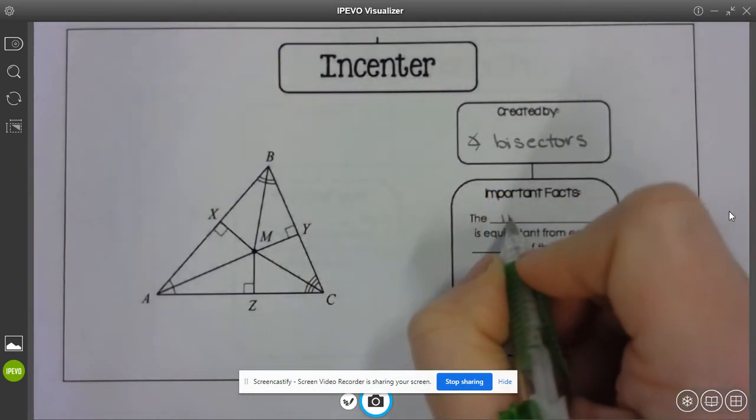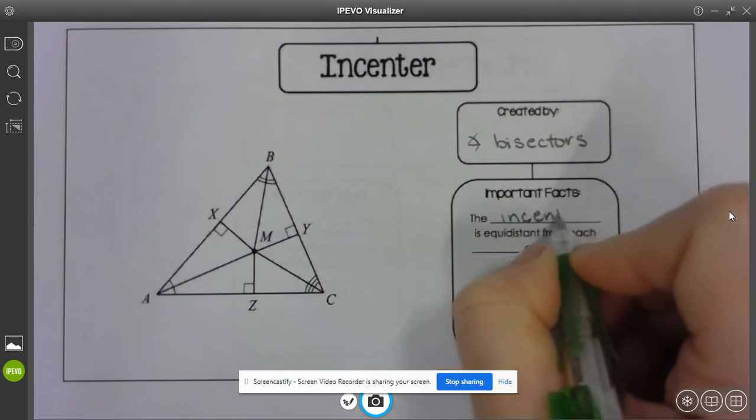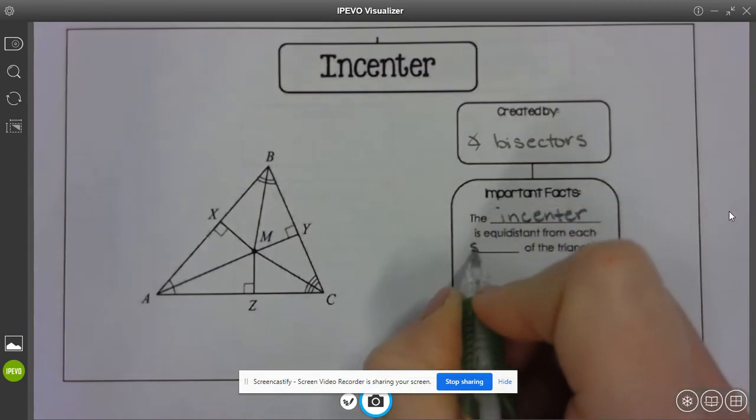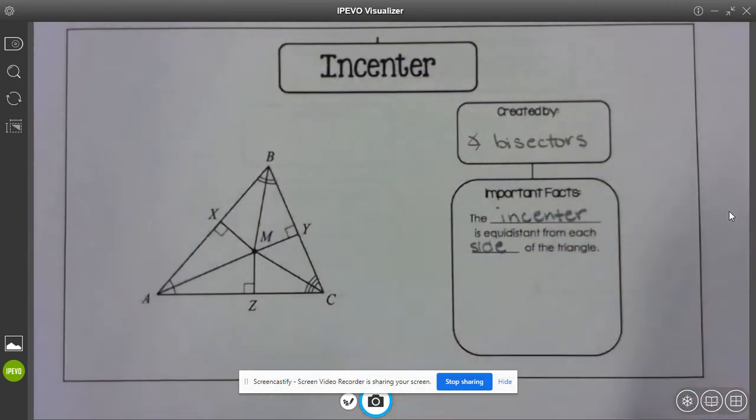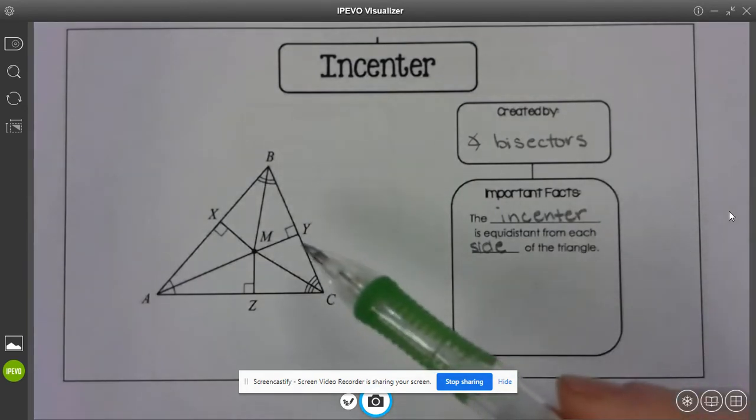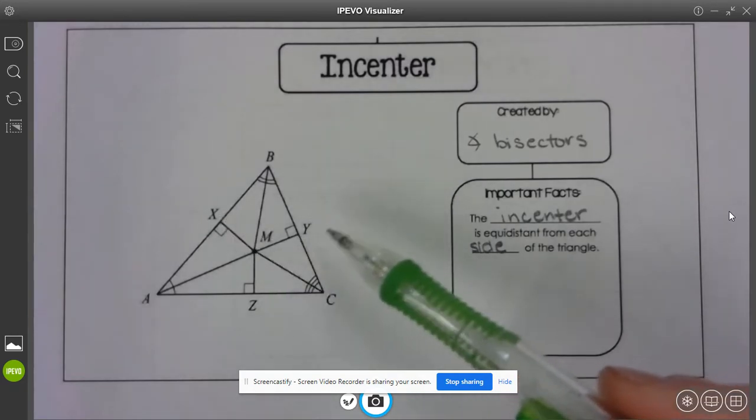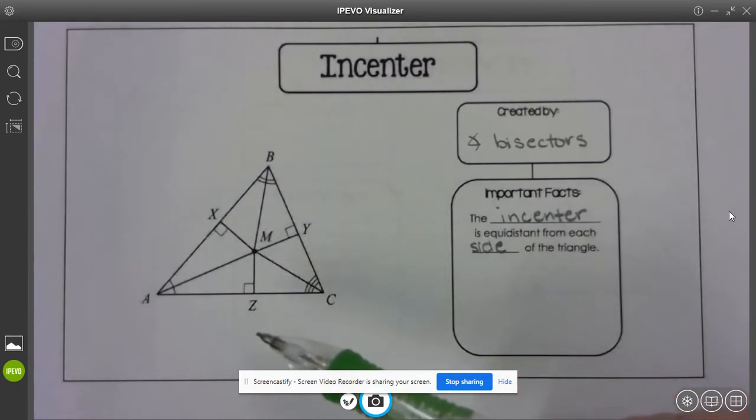So the incenter, M is equidistant from the side of the triangle. So the incenter is equidistant from the vertices, or vertices, let me use proper English.